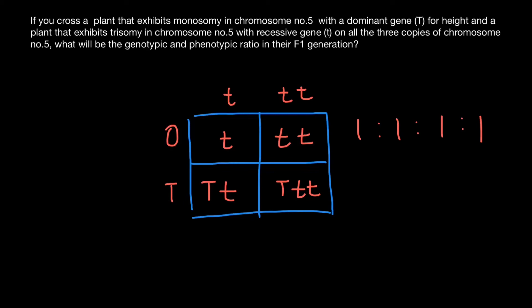This is the genotypic ratio. Now let's take a look at the phenotypic ratio. If we have simple Mendelian genetics, these two genotypes would produce the same phenotype, which is going to be the recessive phenotype. And this genotype would produce the dominant phenotype. So we have two phenotypes, and the ratio is going to be 1:1.